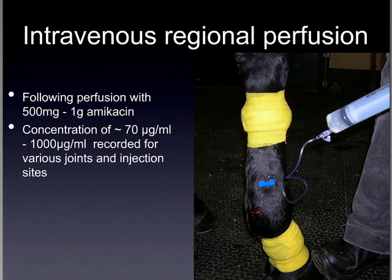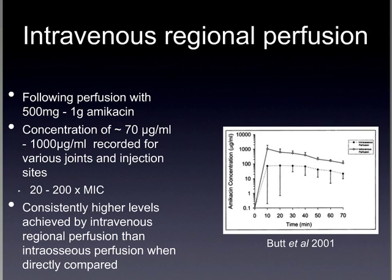The results of intravenous regional perfusion: following perfusion with between 500 mg and 1 gram of amikacin, various studies using various anatomical sites have shown a concentration of amikacin achieved within the synovial fluid of between 70 and 1,000 micrograms per ml — roughly 20 to 200 times the MIC. This is significantly less than direct synovial injection, but massively more than systemic therapy alone. Consistently higher levels are achieved by intravenous regional perfusion than by intraosseous regional perfusion when the two techniques were directly compared at the same doses and sites.